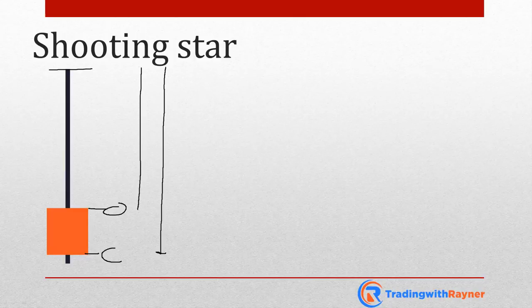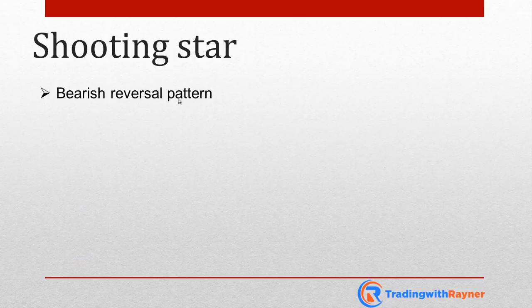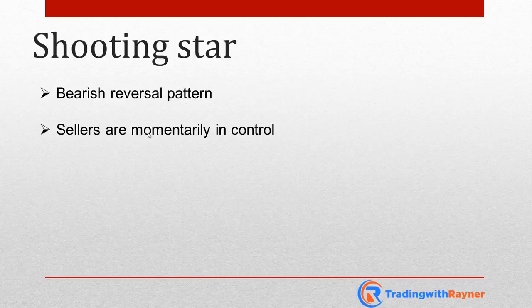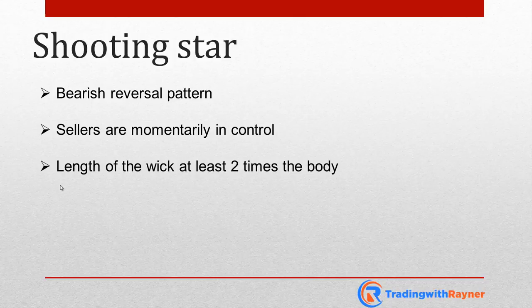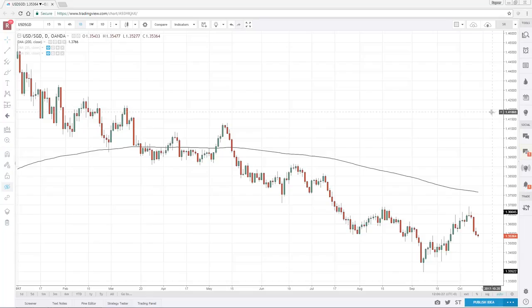It's quite straightforward to know that this candlestick pattern, the shooting star, is a bearish reversal pattern. Sellers are momentarily in control — you can see that the sellers have reversed all the gains made by the buyers. The length of the wick, ideally at least two times the length of the body. And the longer the wick, the greater the price rejection.